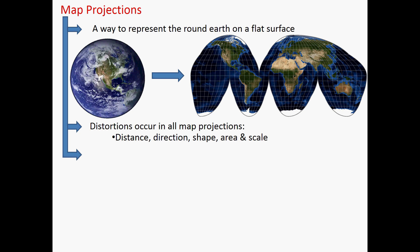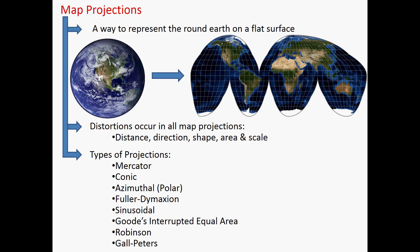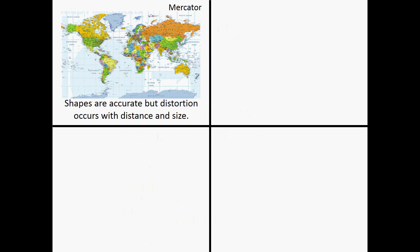A map might lie and say something is bigger than it really is, or that something is farther away than it really is. It could show something as being very close to another body of land or water when they're not at all near each other. First, we'll start with probably one of the most used projections — the Mercator. With this one, shapes are accurate, but distortion occurs with distance and size. The closer you get to the poles, the more stretching occurs. It's fairly accurate in the center.